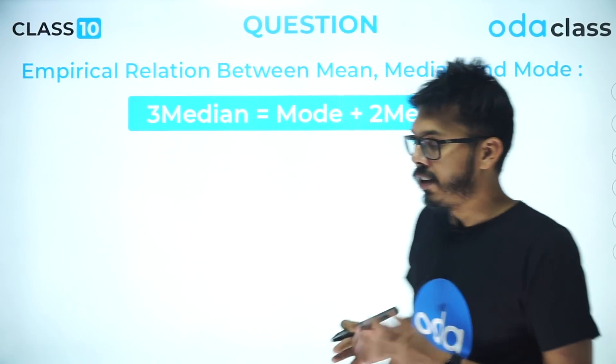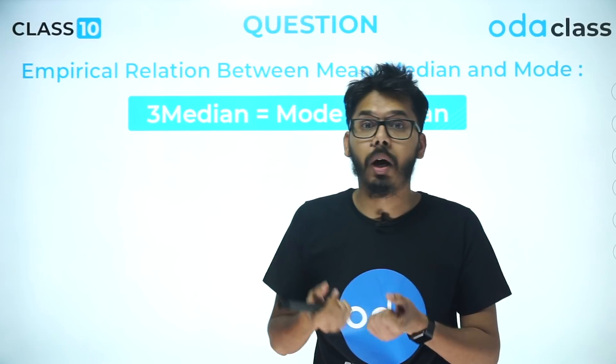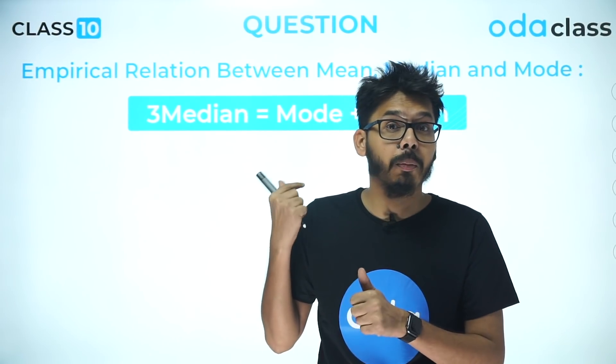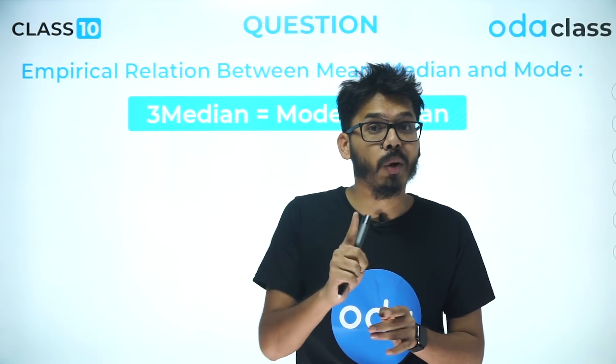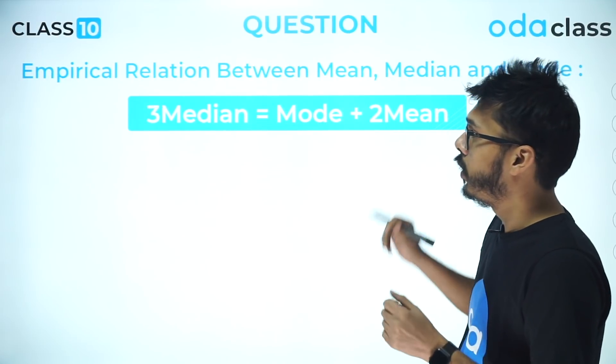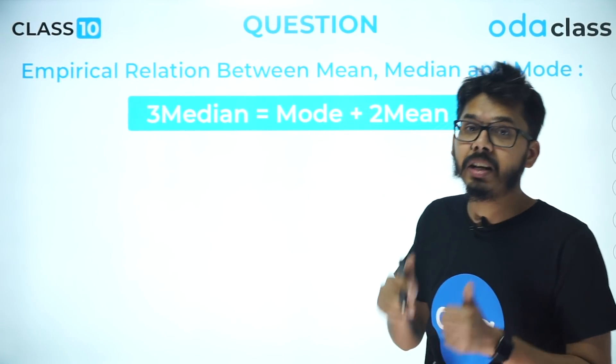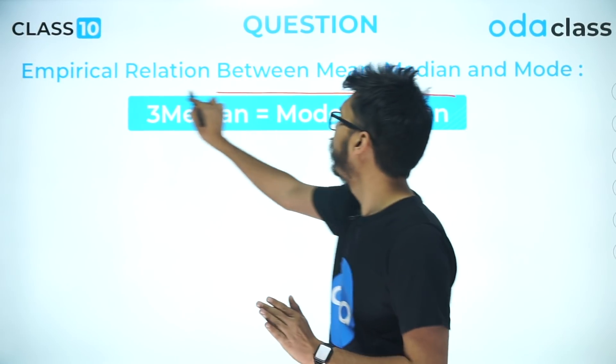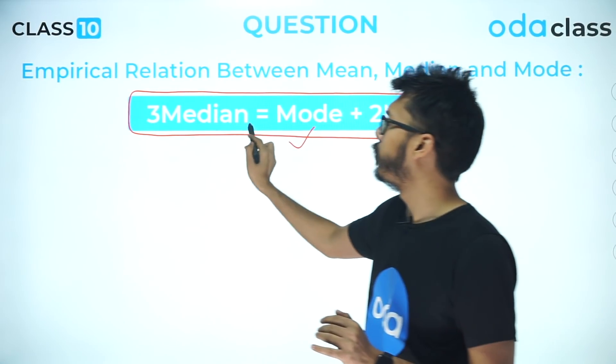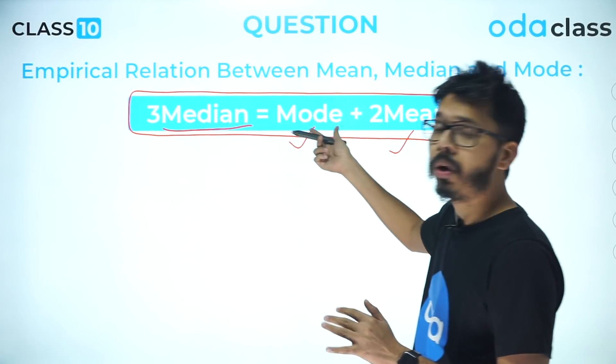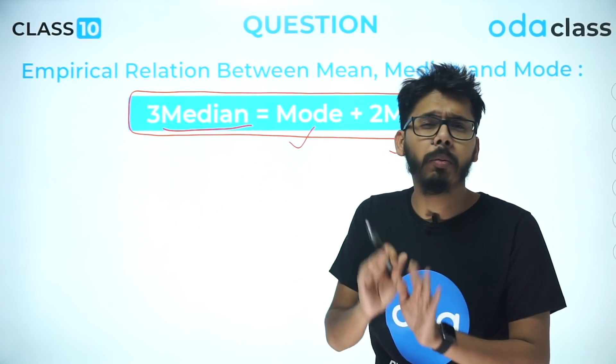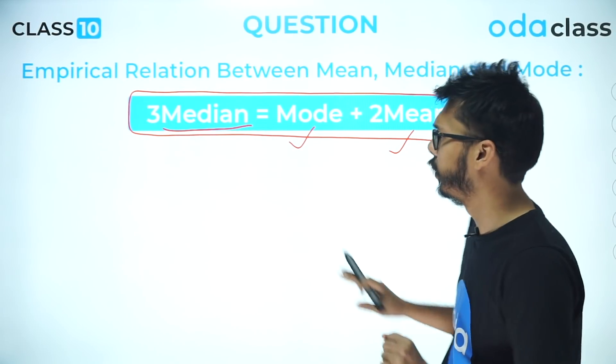The next point is actually interesting because this formula is in statistics. Most people overlook this formula, and when this is coming in the final board exam for one mark, you will miss out that one-mark question or objective type question. So let me recall this as well: when you talk about empirical relation between mean, median, and mode, this is that relation. They might give you two of the values—mode and mean and you're supposed to find median, or median and mode and you're supposed to find mean. They can use this formula in a number of ways, and most probably you'll get a one-mark or two-mark question from this.